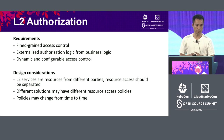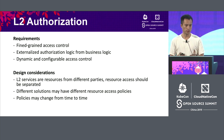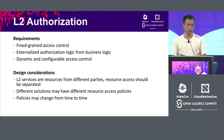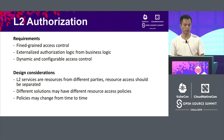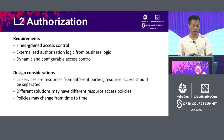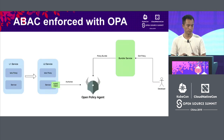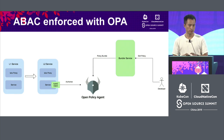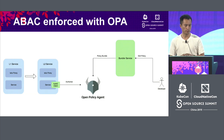In L2, we have services from different partners and resources from different partners, and we want more fine-grained access control. For instance, company A cannot access company B's resources. So that's where Open Policy Agent comes in. We have a library called OPA Client which all L2 services are integrated with. This client will send an authorization request to Open Policy Agent.